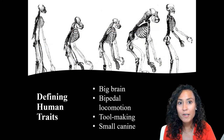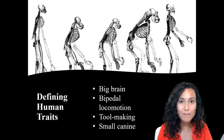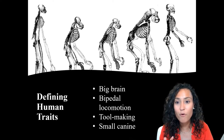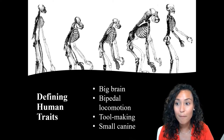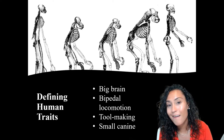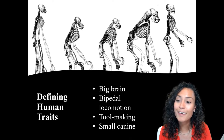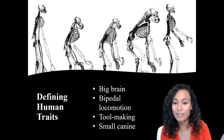For Darwin, the transition from ape to human was defined by four basic characteristics: a big brain, bipedal locomotion, tool making, and small canine teeth.